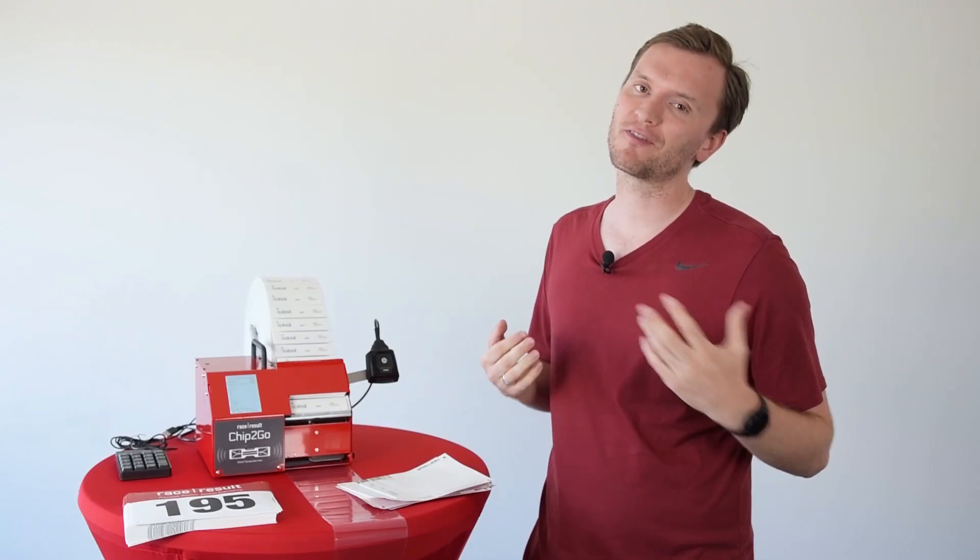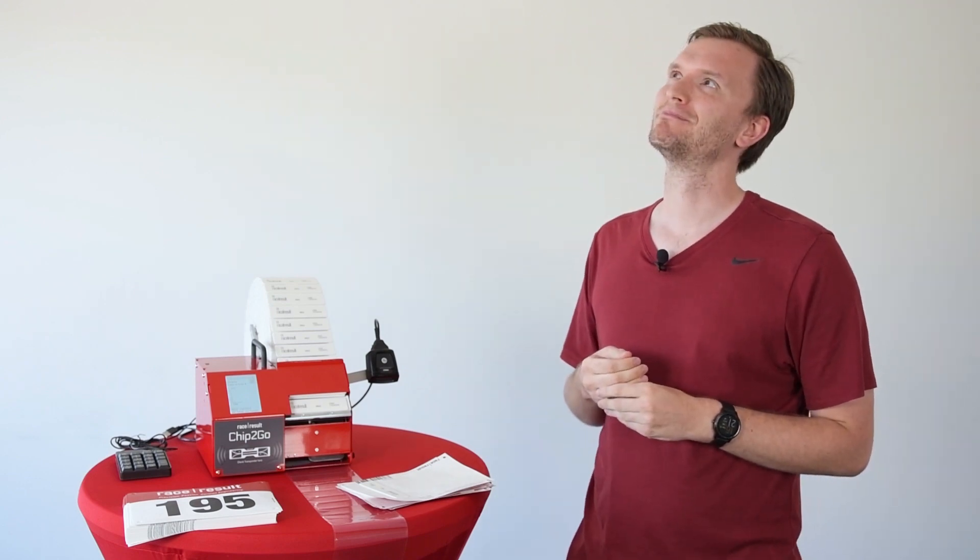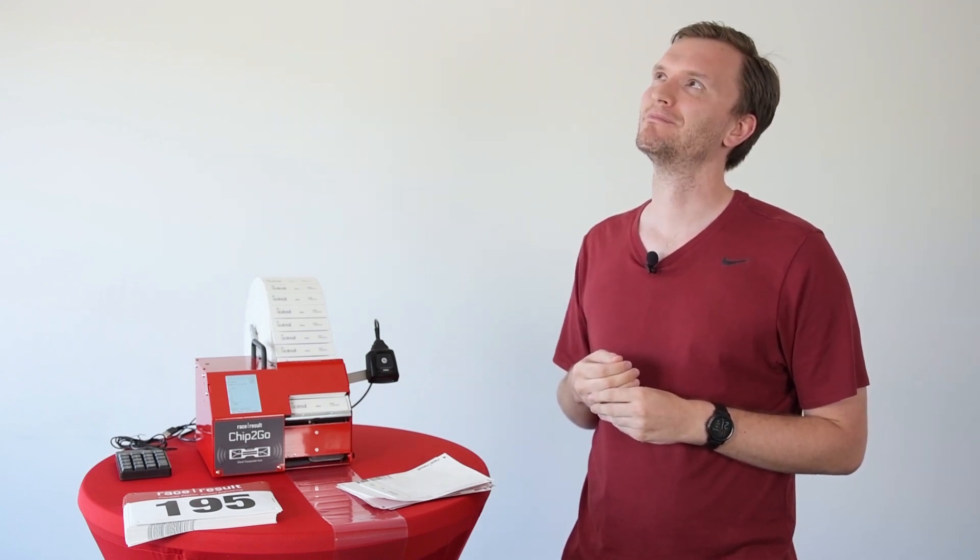Where this comes in useful is those Friday afternoons where an organizer calls and says, hey I need 200 more chips, is that okay? Well now it can be. Assuming you can get the bibs printed in time or have some spare ones lying around, you can use the Chip2Go to quickly encode the transponders you need for those bibs. In fact, why not even take it to the event with you and do it on site?